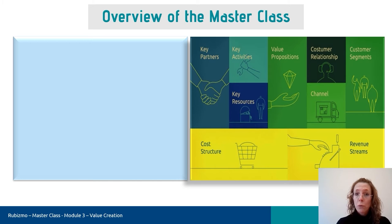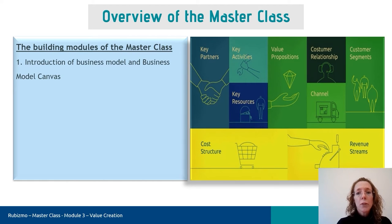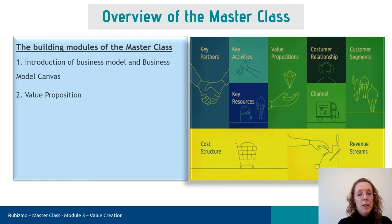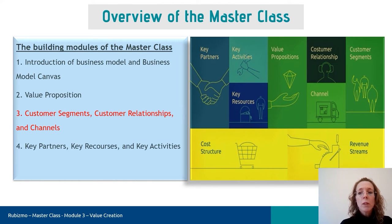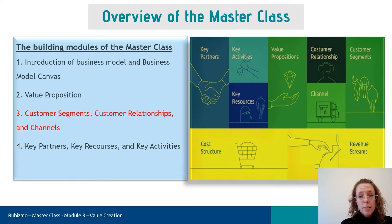The masterclass contains four modules. The first module comprehends business models and introduces the business model canvas. The second module explores the business model canvas value proposition. The third focuses on the right-hand side, in other words, the customer side of the business. The last and fourth module explores the left-hand side of the business model canvas. This is the third module and will therefore focus on the customer side of the canvas.